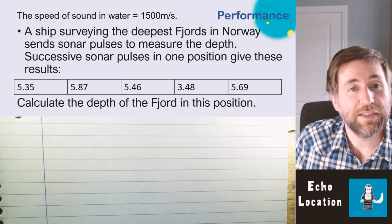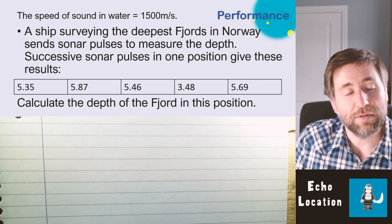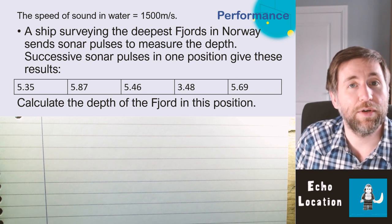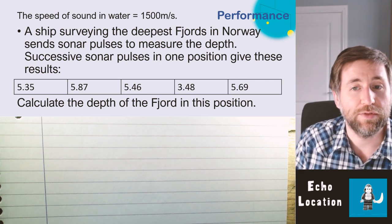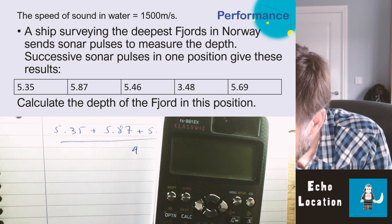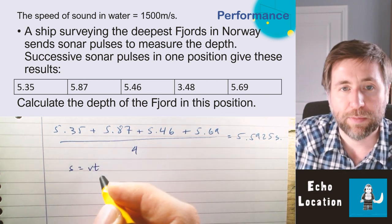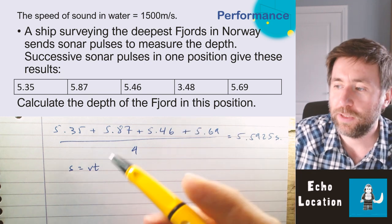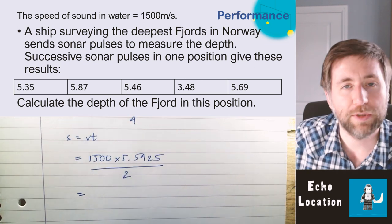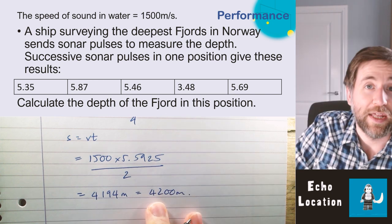A ship surveying Norwegian fjords sends sonar pulses and gets five results. Before calculating an average, check for anomalies — the fourth result is very different, so ignore it as an anomaly. Calculate the average time for the pulse to travel there and back, then use distance = speed × time (speed = 1500 m/s), and divide by 2. Rounding to two significant figures gives the depth of the fjords — they're very deep.